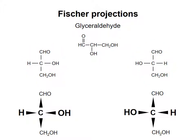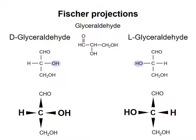The structure in which the hydroxyl group is on the right side in the Fischer projection is called D-glyceraldehyde, and the structure in which the hydroxyl group is on the left is called L-glyceraldehyde.